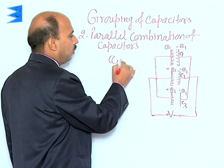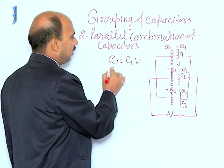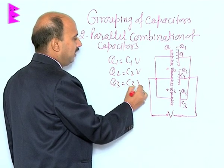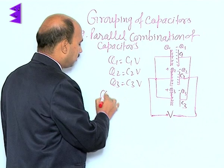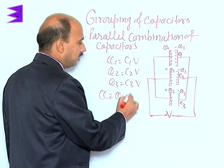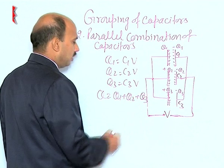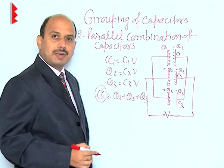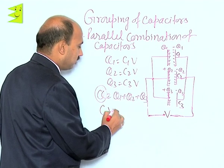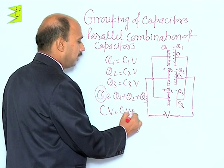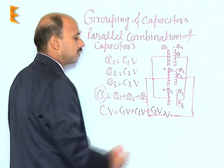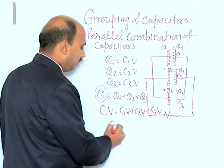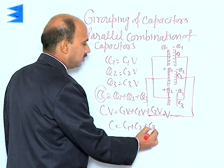So we can write Q1 = C1·V, Q2 = C2·V, and Q3 = C3·V. The total charge Q equals Q1 + Q2 + Q3. Replacing with the equivalent capacitor, we write C·V = C1·V + C2·V + C3·V. Cancelling V from both sides, we get C = C1 + C2 + C3.